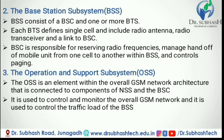BSS can be divided into two parts. BTS is a set of transceivers to talk to the MS. One BTS can cover more than one cell, and its transmitting power defines the size of the cell. BTS is connected to BSC via the Abis interface with a transmission rate of 2 Mbps. BSC controls several BTS, manages channel allocation, and handles handover of calls from one BTS to another. BSC is connected to MSC via the A interface and has a database for all its BTS. The third part is the Operation and Support Subsystem (OSS), which is connected to components of NSS and BSC. It is used to control and monitor the overall GSM network and control the traffic load of BSS.